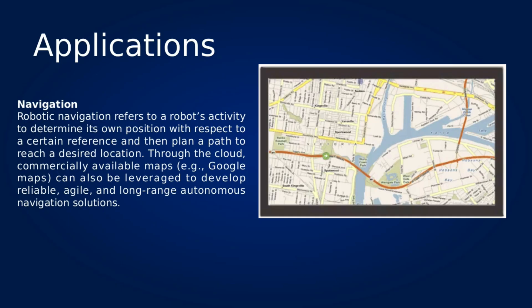Robotic navigation refers to a robot's ability to determine its own position with respect to a certain reference, and then plan a path to reach a desired location. The process of building the map requires large amounts of storage space and is computationally intensive. Cloud robotics provides a very promising solution for future cloud-enabled navigation, as the cloud can provide both storage space for large map data and processing power to facilitate building and searching the map quickly.